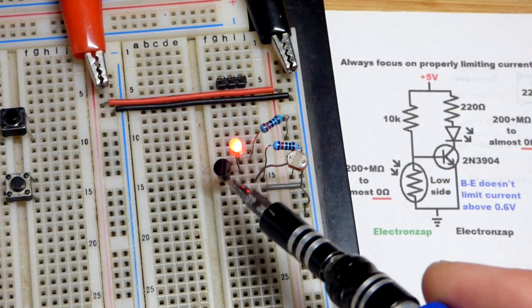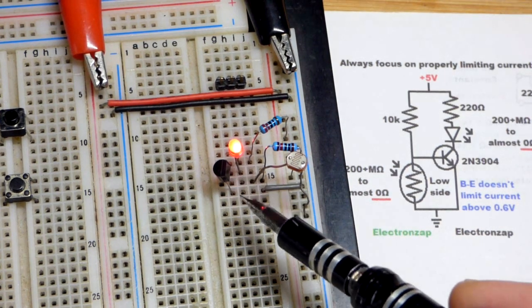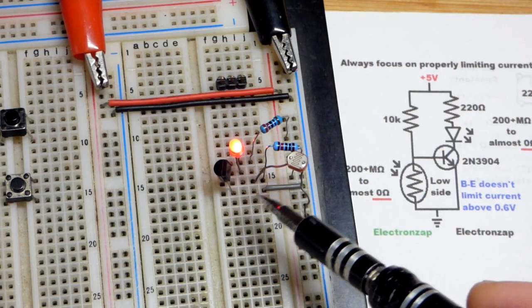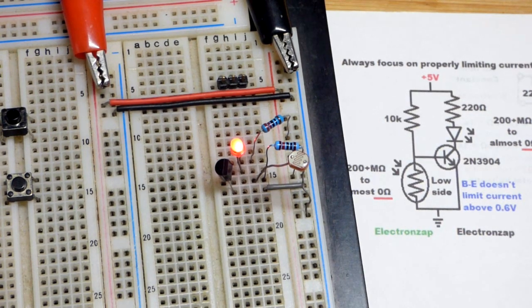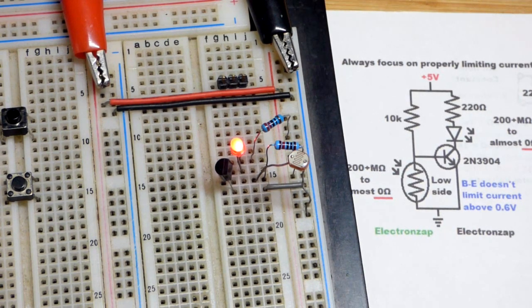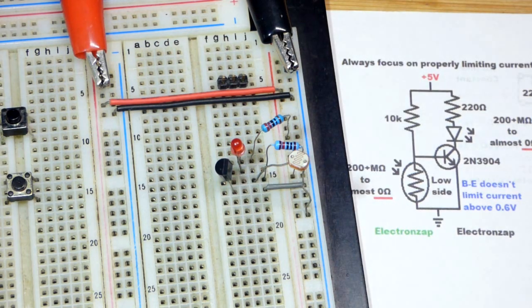So now we have an NPN bipolar junction transistor right there, emitter base collector, and we need more light to turn the transistor off. I'm going to get the side of the flashlight right there, and there you can see it turn off.